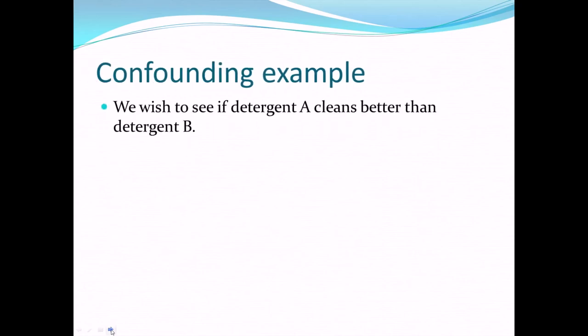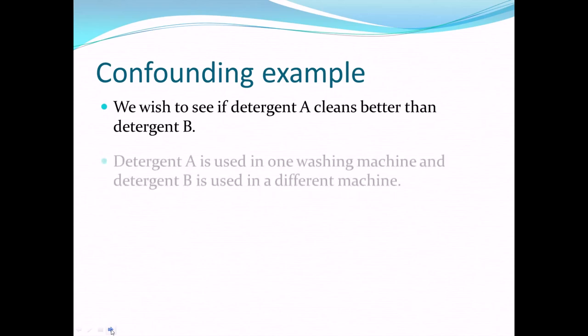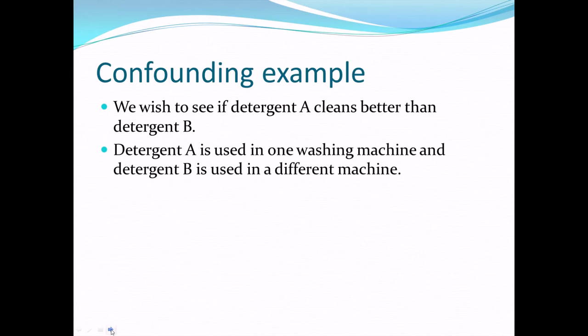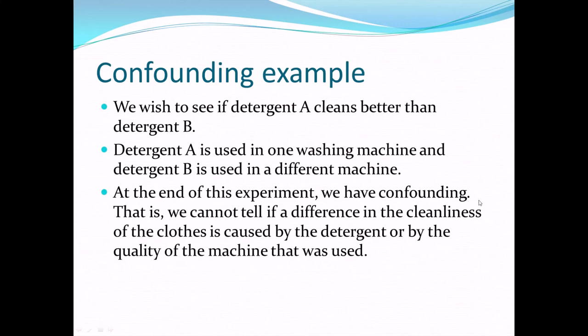For confounding: if you want to see if detergent A out-cleans detergent B, you wouldn't want to put detergent A in one washing machine of a different make from the one holding detergent B. When the clothes come out, how would you know whether the cleaner batch was due to the detergent or the machine? Ideally, wash a load in a machine, pull it out, change the detergent, and wash a second load in the same machine. That's perfect control. Without it, you have confounding — you just cannot tell which was causing one batch of clothing to come out cleaner.